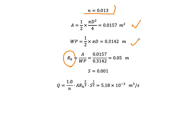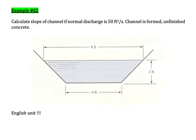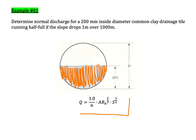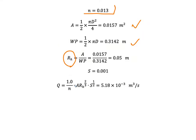The wetted perimeter is the perimeter wetted by the fluid — it is half of the full circumference of the circular pipe, calculated as 0.3142 meters. So we get the hydraulic radius equal to 0.05 meters.